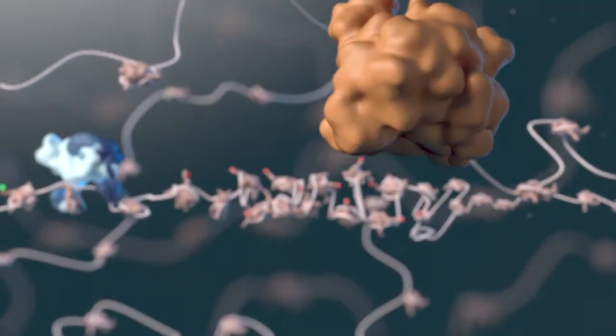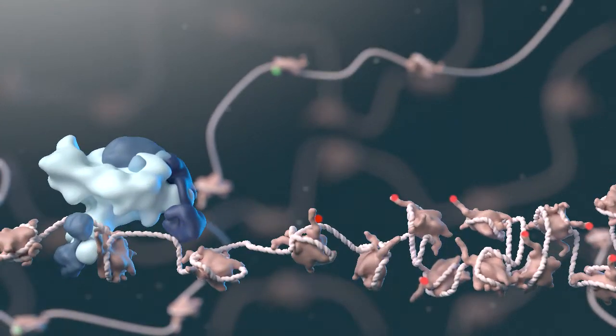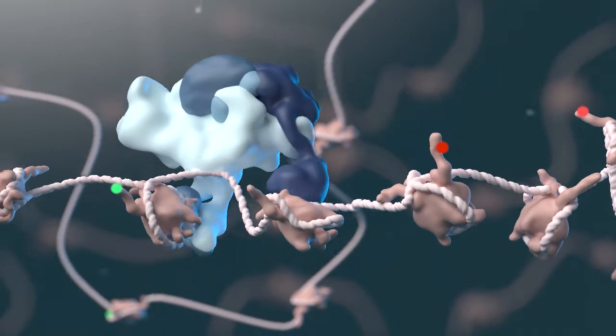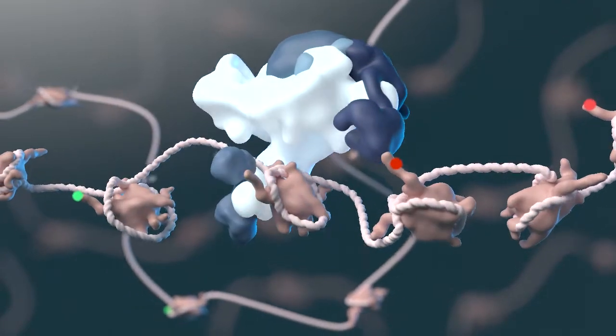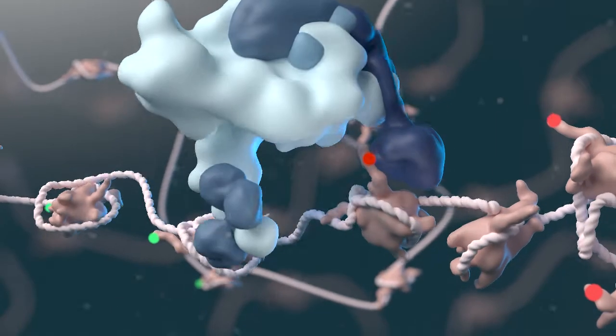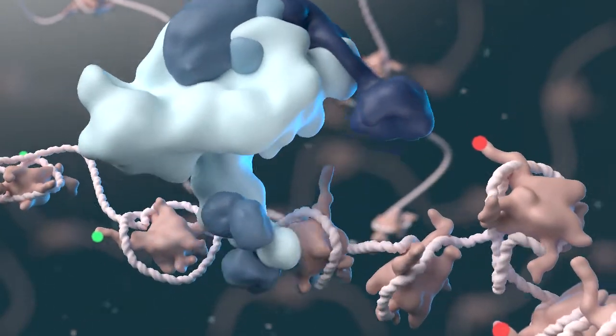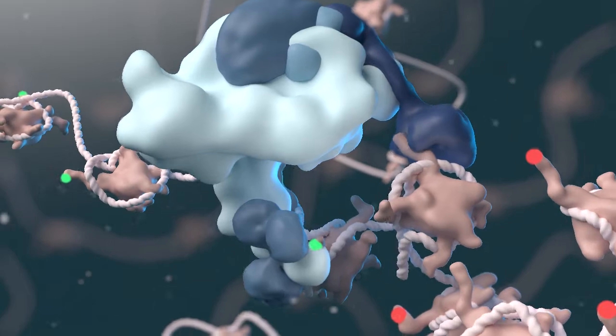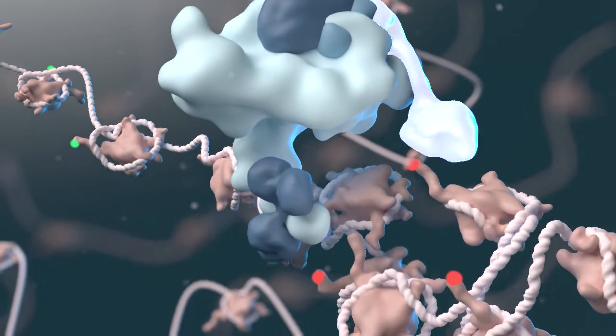The compass complex catalyzes the methylation of lysine 4 on histone 3 through its subunit MLL3 and also the demethylation of lysine 27 mark on histone 3 left by PRC2 through its subunit UTX.